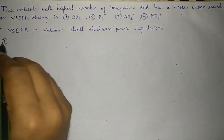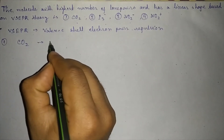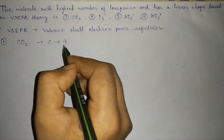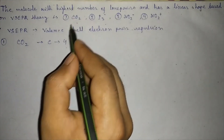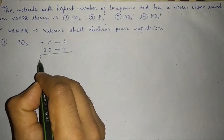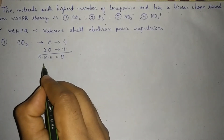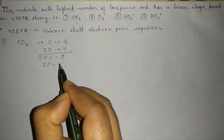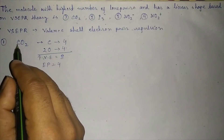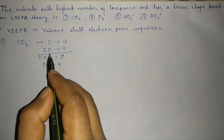In the case of CO₂, the central atom is carbon, which has four valence electrons. The two oxygen atoms contribute four electrons, so the total number of electrons equals eight, giving four electron pairs.